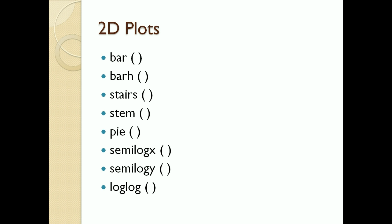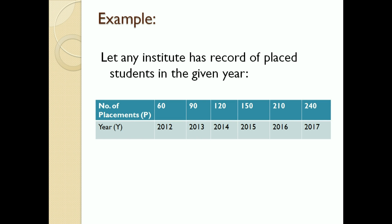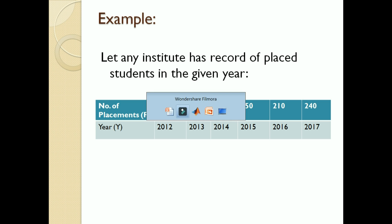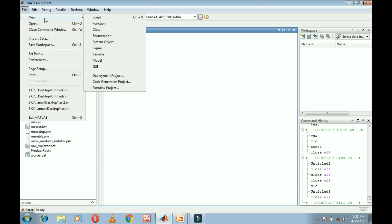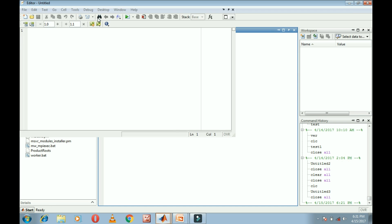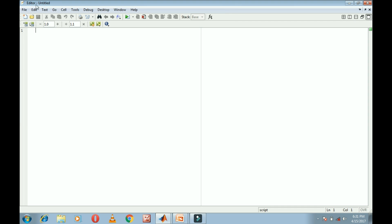We will discuss each one by one. For this we take the example of a placement record of any institute, where P shows the number of placements and y shows the year. Open your MATLAB window, go to File and select the Script file. Once you select the script file, the editor window will open.